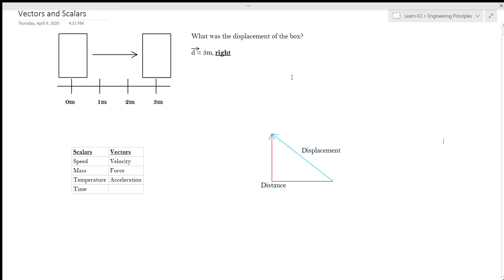Hello, hello. Welcome to the first proper lesson of the Principles of Engineering course on LearnIO. Our first lesson is going to be part of the simple physics unit, and we're just going to cover vectors and scalars, just to understand a little bit of what vectors are and how they differ from scalars.